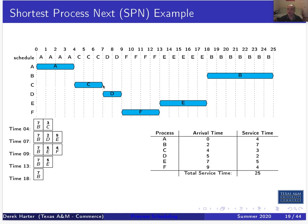C runs until it's finished at time seven since we're non-preemptive. While C was running, D arrives at time five and E arrives at seven. When C is done, we have B, D, and E. We select the shortest — D — which runs until time nine. At time nine, B and E are still in the queue, and F arrives at time nine, giving us three processes to select among.